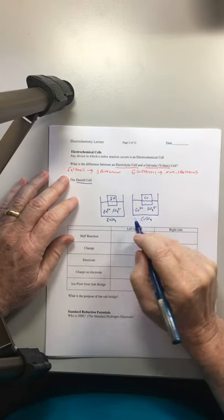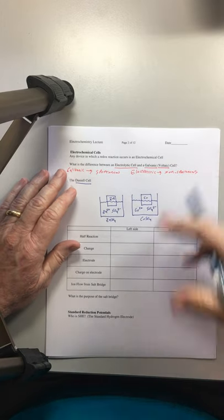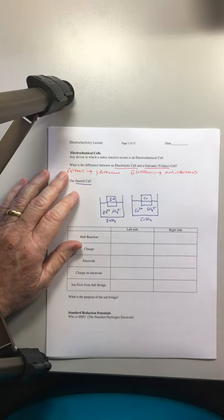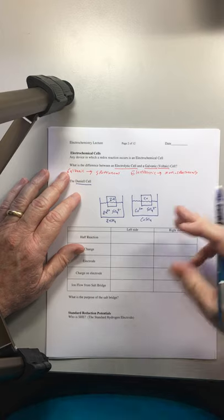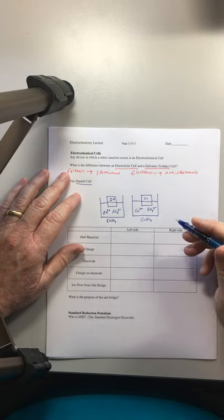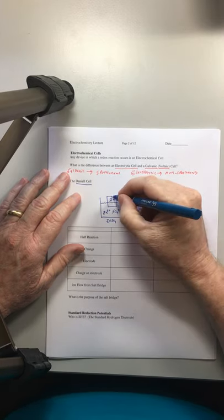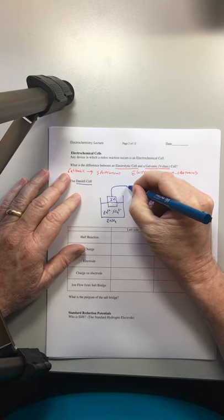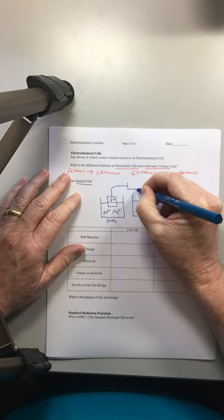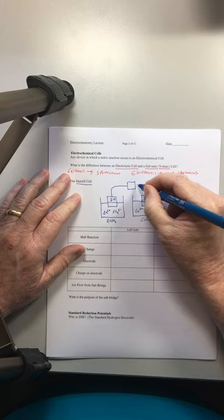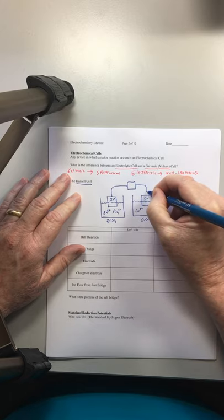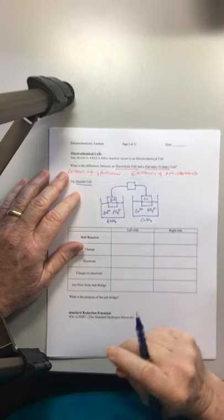The anion that we use, we just want something that's soluble. Nitrates work wonderfully, sulfates work wonderfully. They're soluble with lots of things. Chloride's soluble with a lot of things.